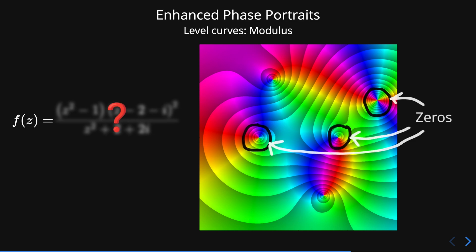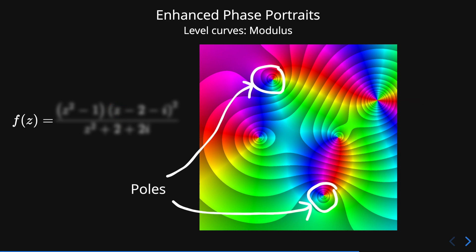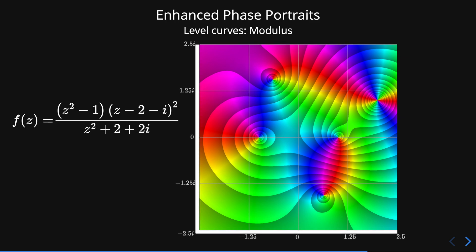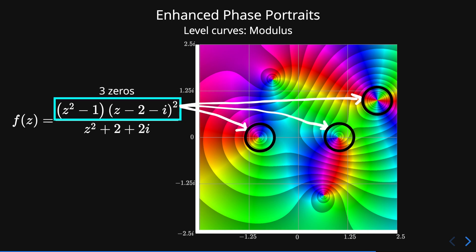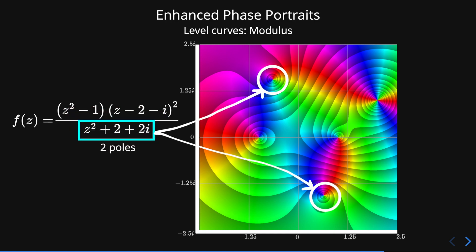So the zeros are these three points and the other two points are poles. We can confirm this by analyzing the rational function that corresponds to this enhanced phase portrait. If we look at the numerator, we can see that there are precisely three zeros. On the other hand, the denominator indicates that there are exactly two poles.